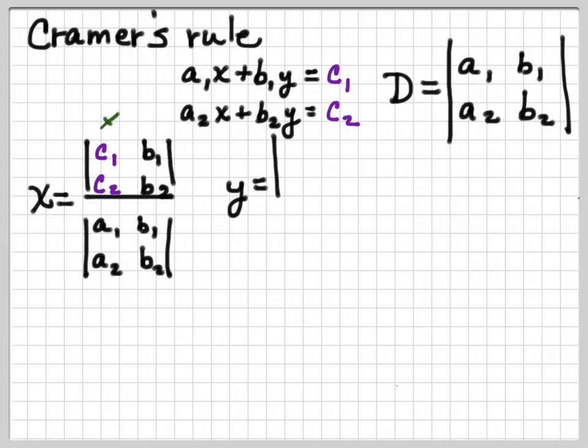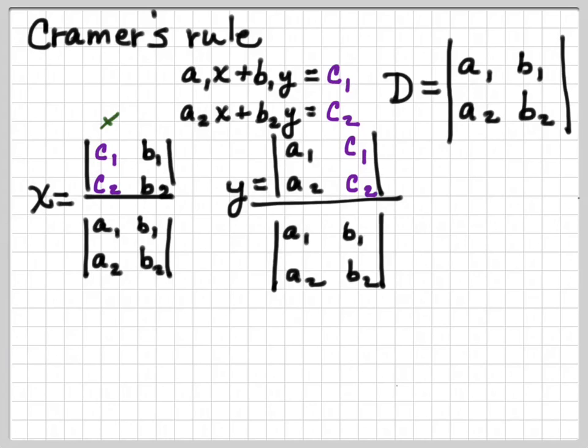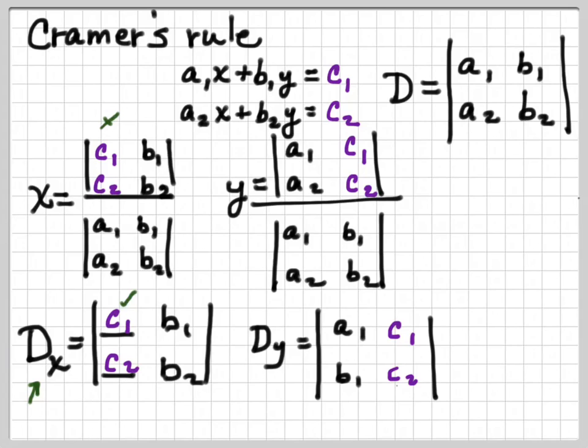And now y is going to be on the top, we're going to replace the y column with c sub 1 c sub 2, and keep the other column intact. And of course, if you notice, the denominators of both of them are just our main determinant. So the determinant for x is going to be formed by replacing the x column with c sub 1 c sub 2, and keeping the other column the same. And the same way, the determinant that's associated with y is going to be, replace the y column with the c sub 1 c sub 2, and keep the other one intact.